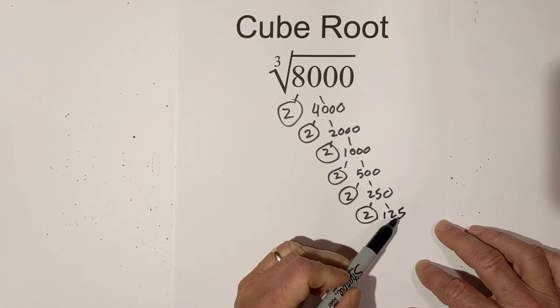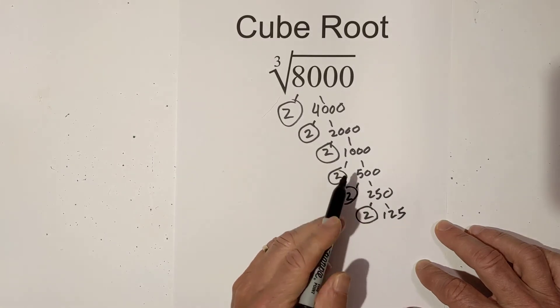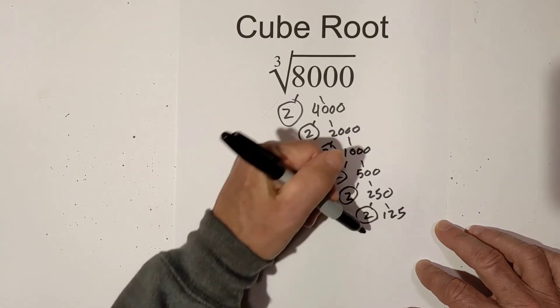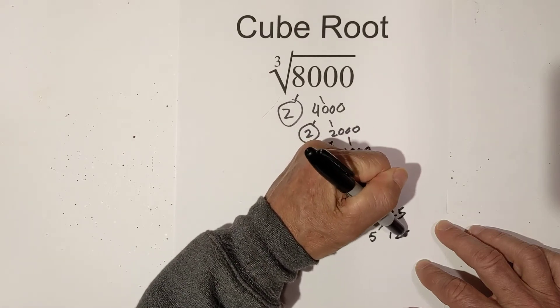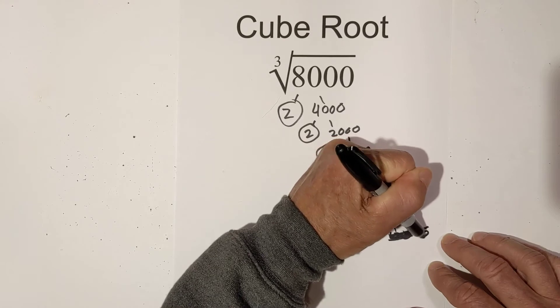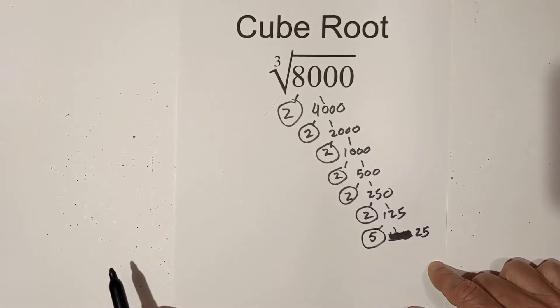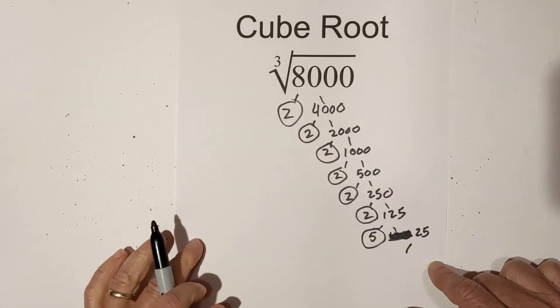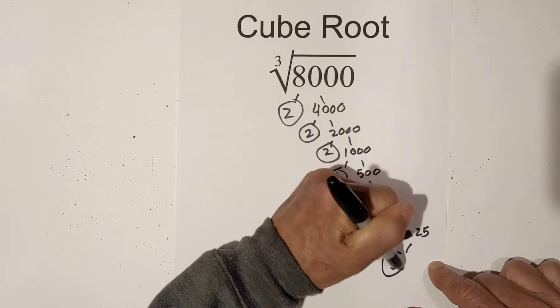Now we no longer have an even number so we have to switch gears a little bit. 5 times 25 equals 125, and then we are down to 5 times 5.